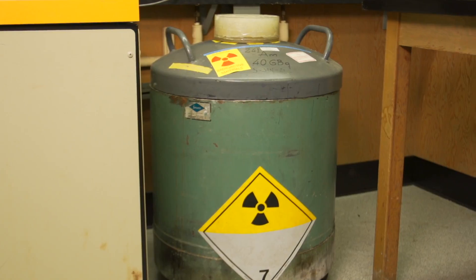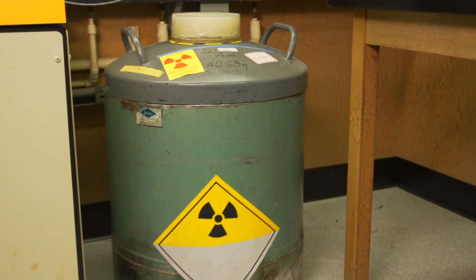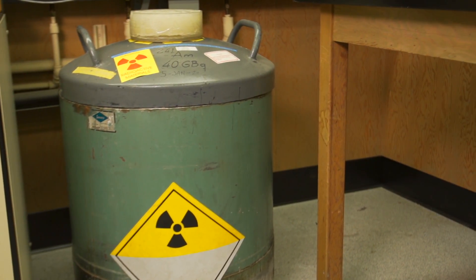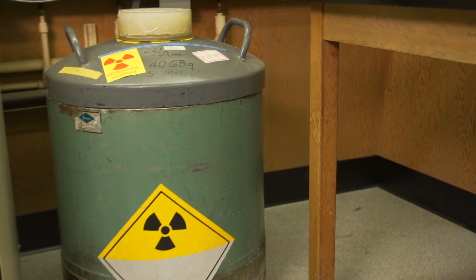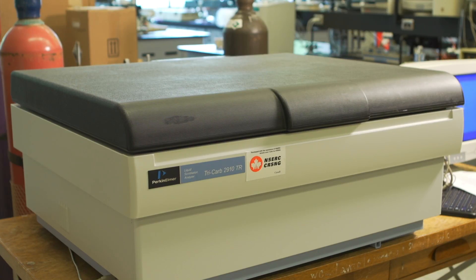Two different instruments are used in sequence for neutron activation analysis. The two instruments are the americium beryllium neutron source and the Perkin Elmer tricarb 2910 scintillation counter.